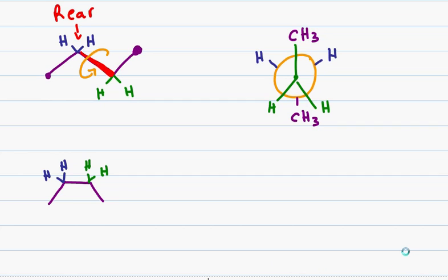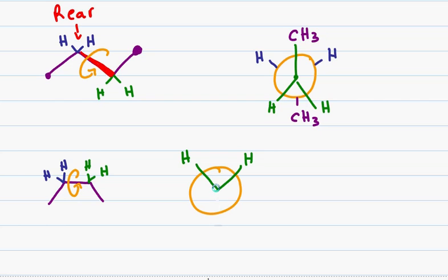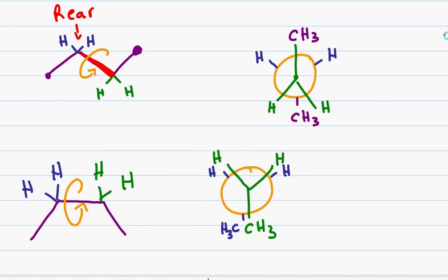Once again, imagine taking your hand, putting it in the center over the carbon-to-carbon bond, and then draw the circle to represent the Newman structure. In the front, I have two green hydrogens in the up position and a methyl group in the down position. In the rear, I also have two hydrogens in the up position and a methyl in the down position. This is the eclipsed version of butane converted from the sawhorse to the Newman Projection.